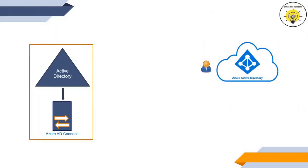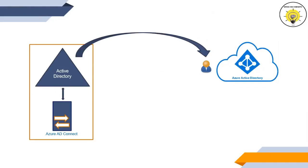When you create a user account in Office 365, that type of identity or object is called cloud-hosted identity. That means this object can be managed directly from Office 365 or from Azure Active Directory. Now let's assume that the account that you have created in Office 365, you want to manage this account from on-premise Active Directory — meaning if you want to change the display name or modify any attribute for this particular account, you want to do all these changes from on-premise Active Directory, not from Office 365.